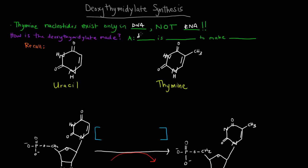If we have DUMP, deoxythymidylate monophosphate, all we have to do is methylate it. It's methylated to make DTMP.